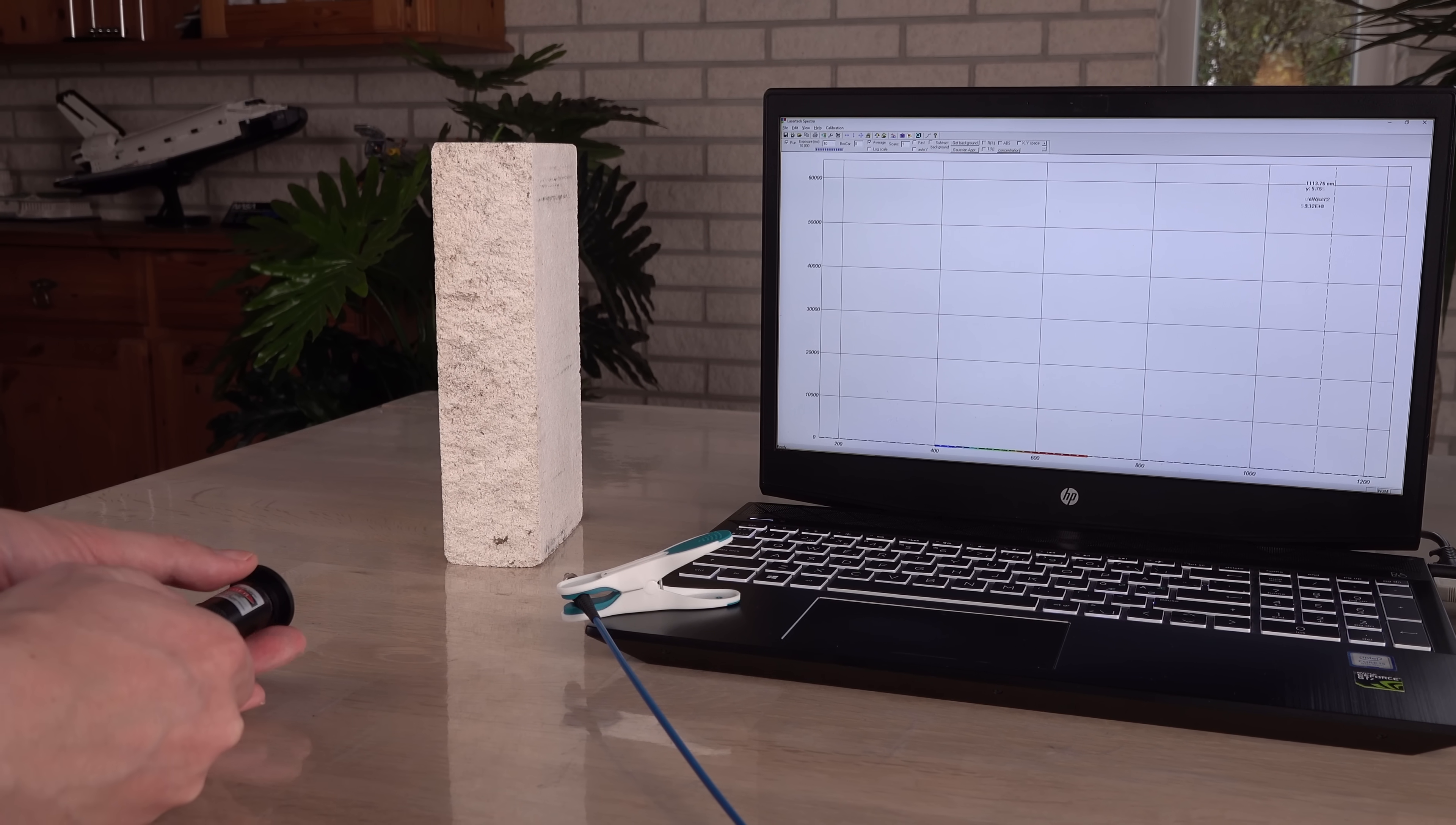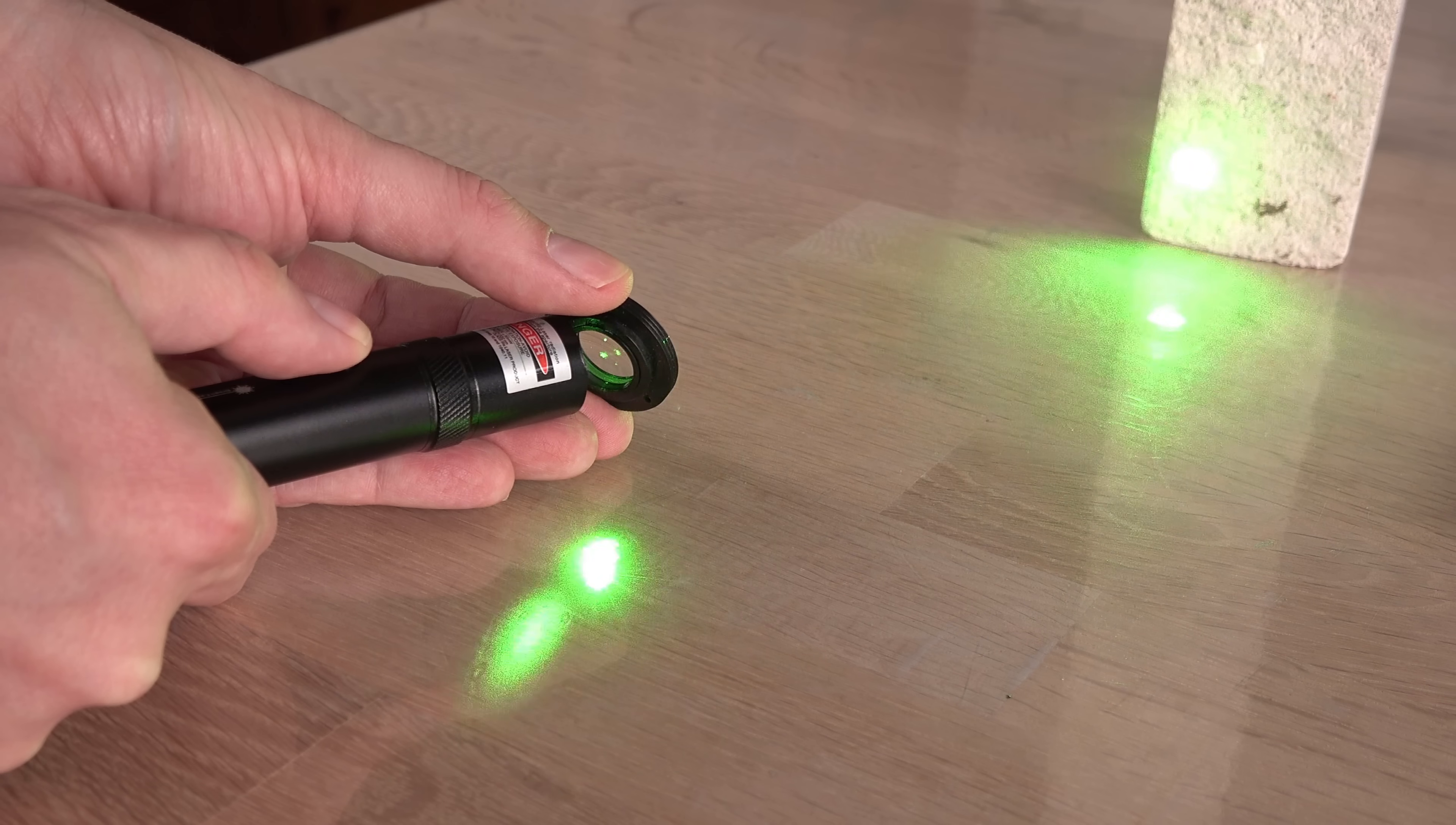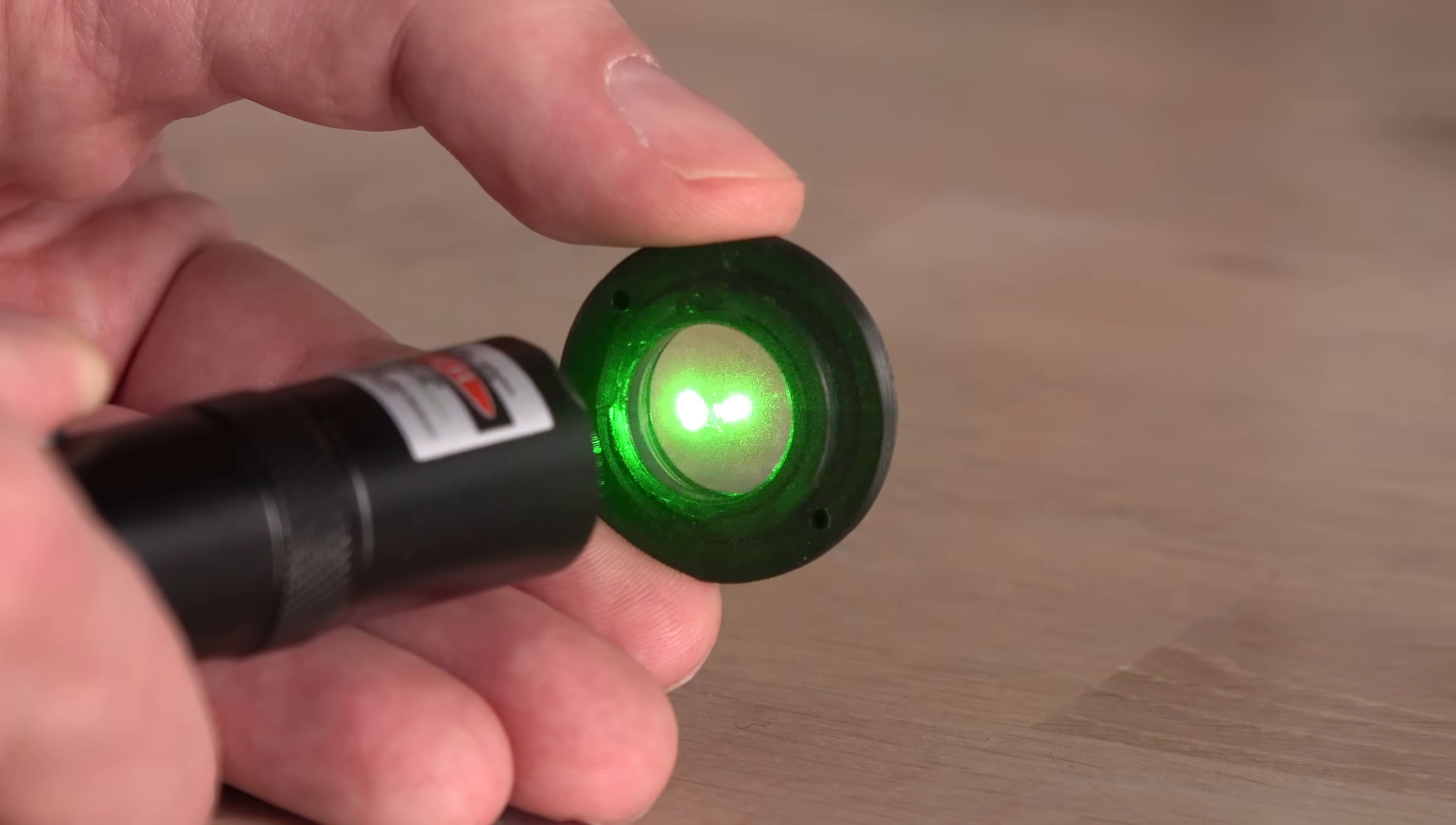A lens could do the job, but introduces a new safety issue: beam reflection. This reflection can be enough to fry a laser diode if sent back into the laser, or fry eyes if not.